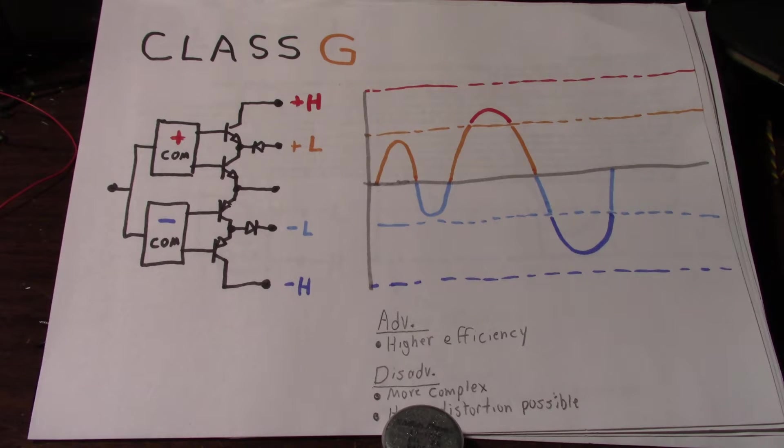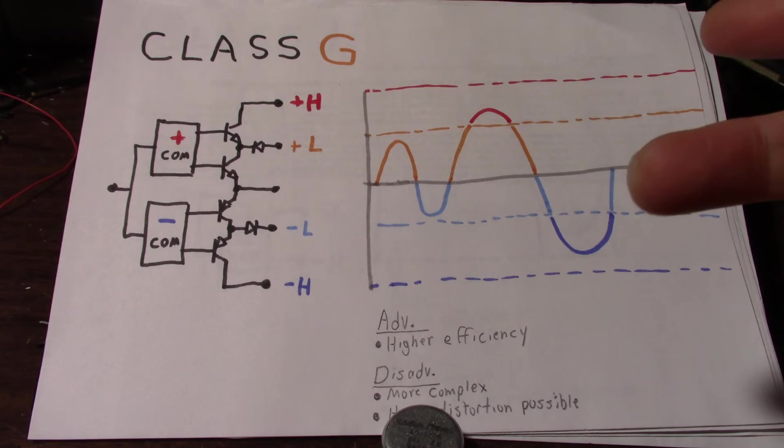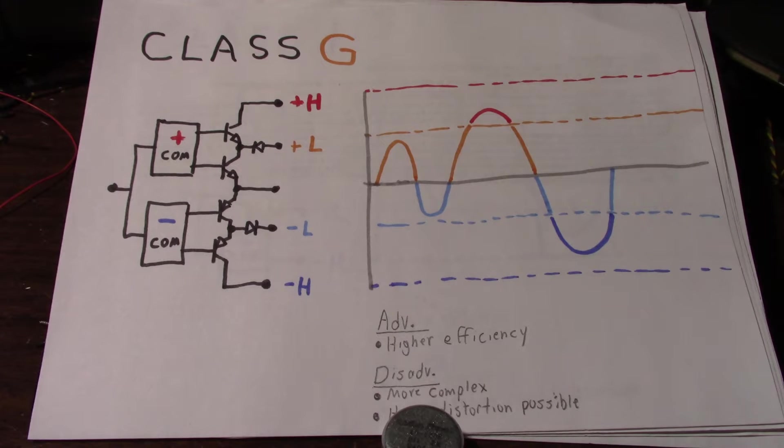Class G and H terms can be reversed. Some people call a Class G amplifier a Class H, and some call a Class H a Class G. Isn't that wonderful? Don't you just love standards? I'm going to consider Class G the way Bob Cordell in his Audio Amplifier Design book describes it, and I think Japanese engineers describe it this way as well. So Class G and Class H are just another way to make an audio amplifier perform more efficiently.